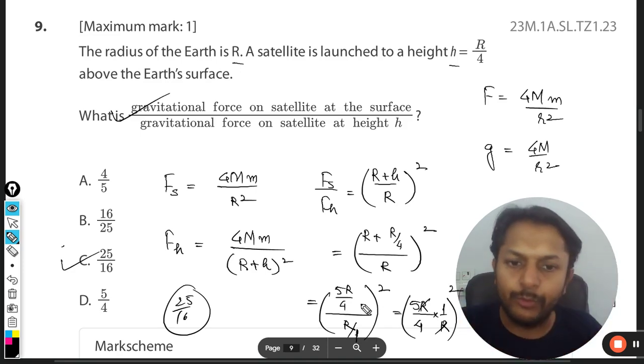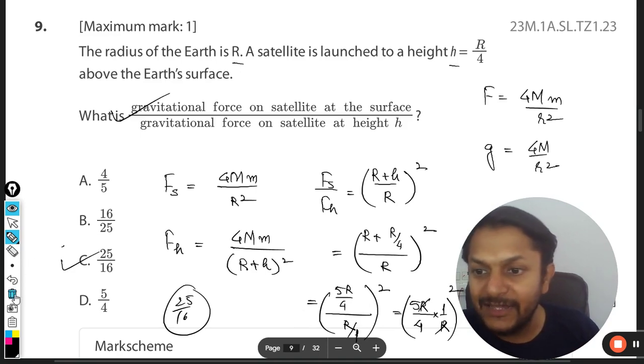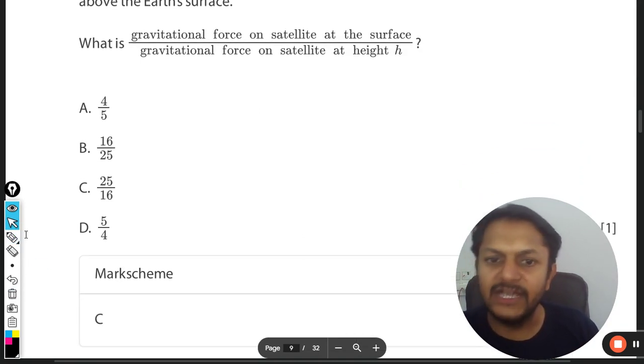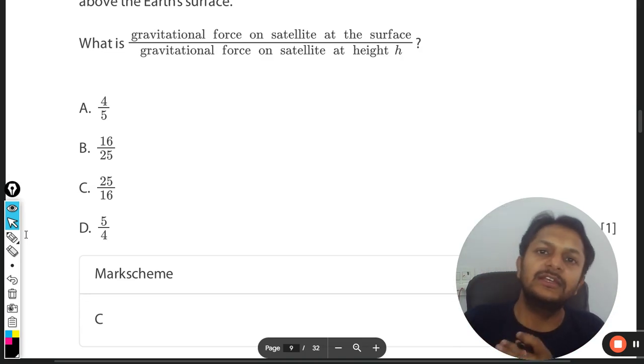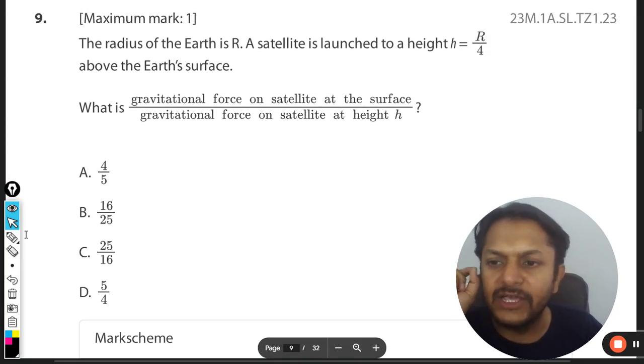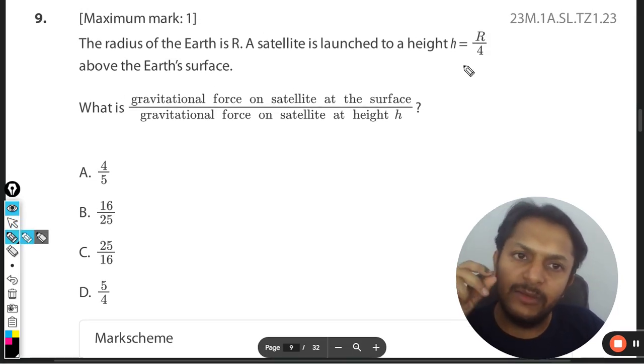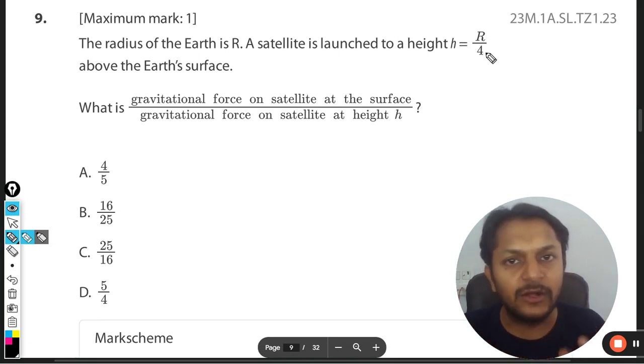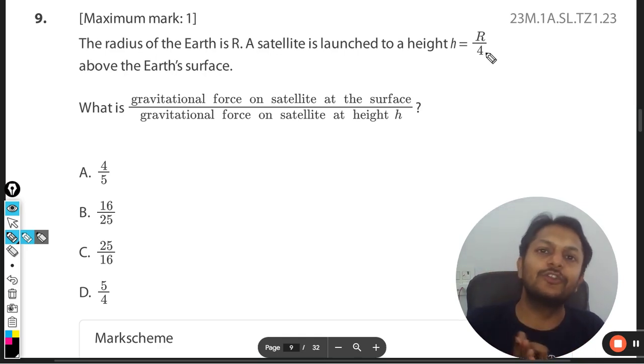The answer is C. According to the mark scheme, the answer is also C. In this kind of question, many times students take R/4 itself instead of R+R/4, and that is the point where they are mistaken. Be very careful. This is it. Professor Moon, thanks for watching, bye.